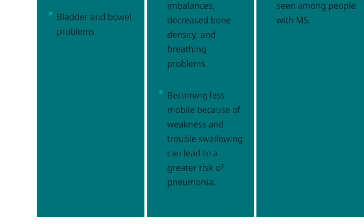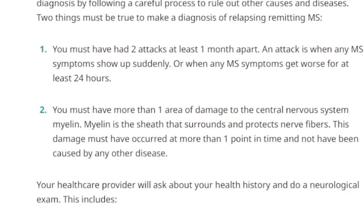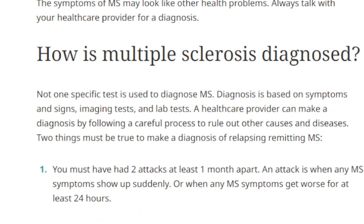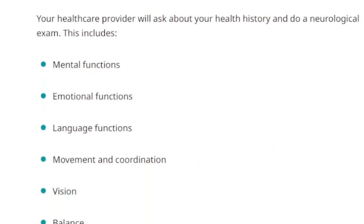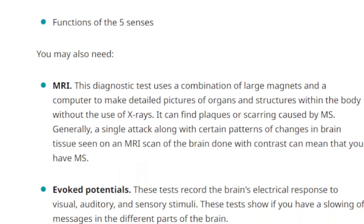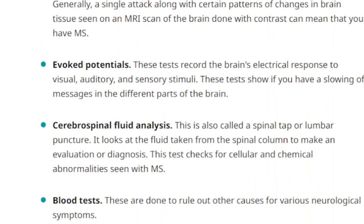The way MS is diagnosed, they basically have to do a CT, but you have to show signs of two attacks in at least a month. They assess mental function, emotional function, language function, movement and coordination, vision, balance, and function of the five senses. They will also do an MRI, evoked potentials, a spinal tap, blood tests, and a dye exam.